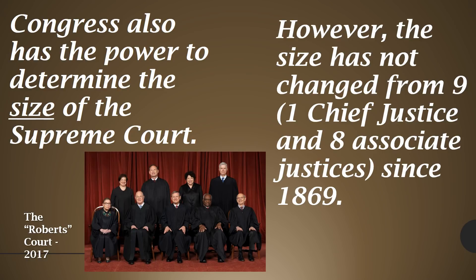When a chief justice leaves, the president has two choices: appoint an entirely new member as chief justice — as happened with Roberts — or elevate a sitting associate justice, as Reagan did when he elevated Rehnquist to chief justice and appointed Scalia as the new associate justice. There is one chief justice and eight associate justices.